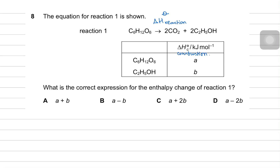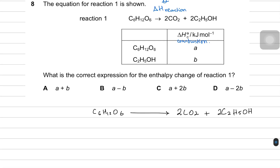If you follow my previous video, we talked about these kinds of questions. The equation shows C6H12O6 reacting to make 2 moles of carbon dioxide and 2 moles of ethanol. The combustion of C6H12O6 would produce 6 moles of carbon dioxide and 6 moles of water — that would have been combustion enthalpy A. Enthalpy B is the combustion of ethanol.